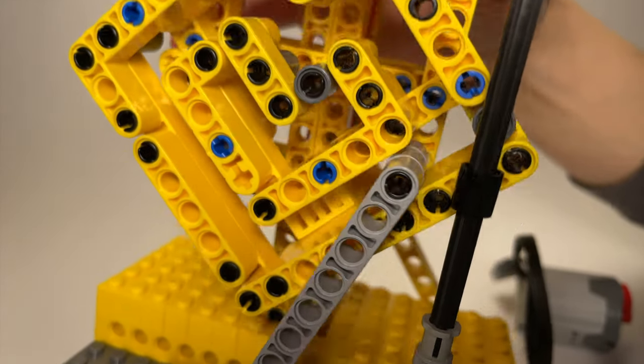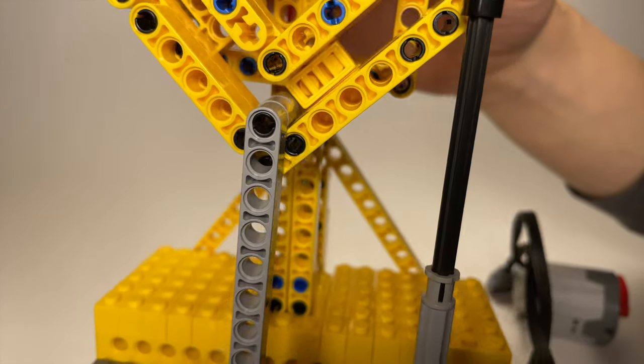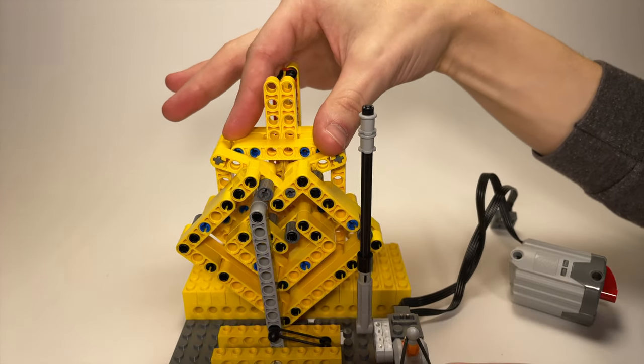You can see once the gray connector at the end of the beam passes the yellow slope, it's forced up to the left instead of the right where the rubber band is pulling it.